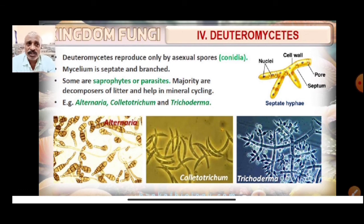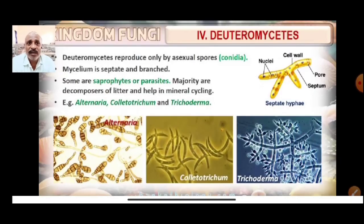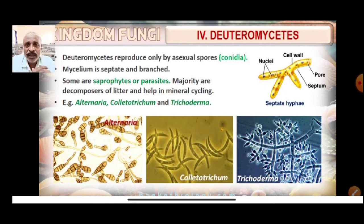The majority of Deuteromycetes are decomposers of litter and help in mineral cycling. Examples include Alternaria, Colletotrichum, Trichoderma, and others. These structures can be observed in pictures showing Colletotrichum and Trichoderma.